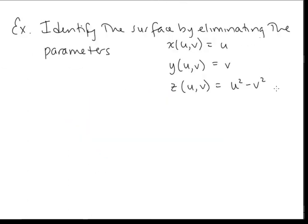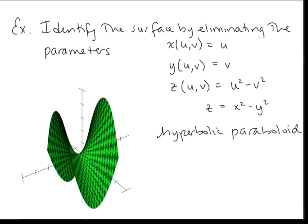Identify the surface by eliminating the parameters. We have x equal to u, y equal to v, and z equal to u squared minus v squared. If x equals u and y equals v, then z is just x squared minus y squared. That's our hyperbolic paraboloid, and that's all we needed to do for this problem.